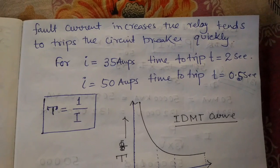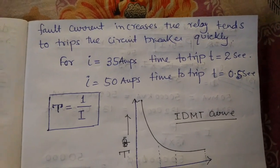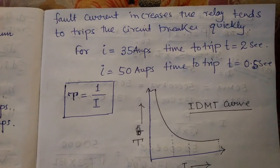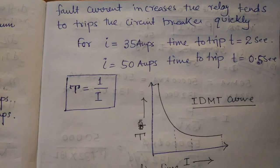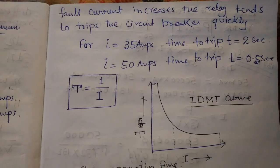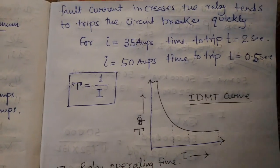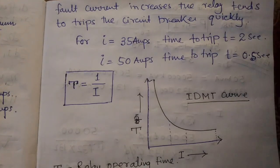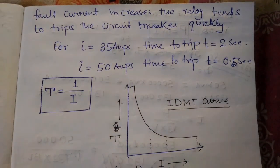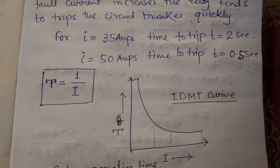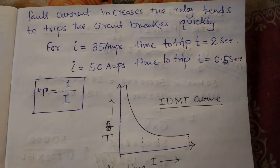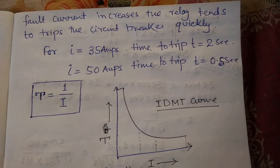Now we will discuss an example of current with respect to time. For example, if the current flowing through the breaker or relay is I equal to 35 ampere, the time to trip the IDMT relay is 2 seconds. If the current continues increasing and reaches 50 ampere, the time of tripping is 0.5 seconds.